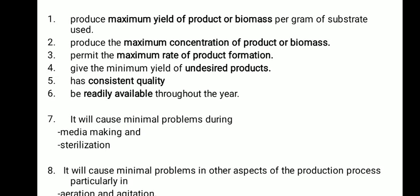The fourth criterion is that it gives the minimum yield of undesired products. As mentioned earlier, some organisms have the ability to produce by-products as well. By performing media optimization, the formation of undesirable products is minimized, and the desired product production can be increased.